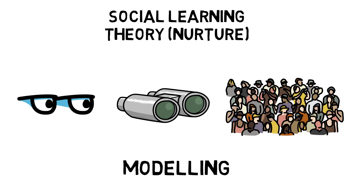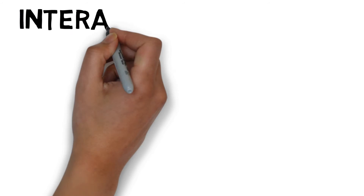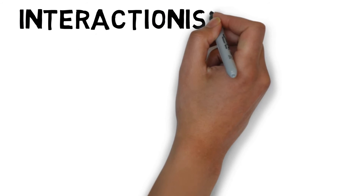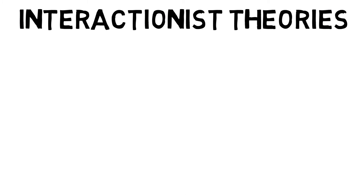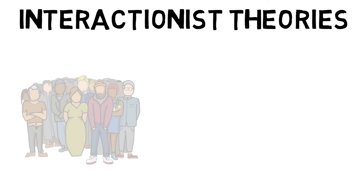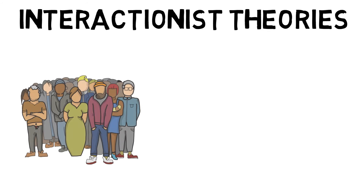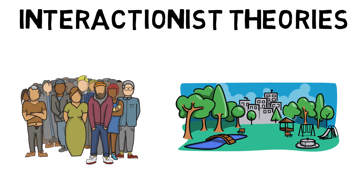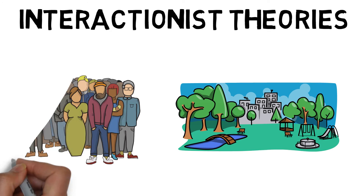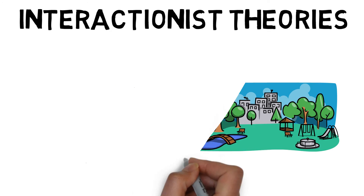Interactionist theories are a mix of social learning and trait aspects. They argue that we are born with certain characteristics which interact with the environment, so personality is seen as a relevant predictor of behaviour in some, but not all, situations.